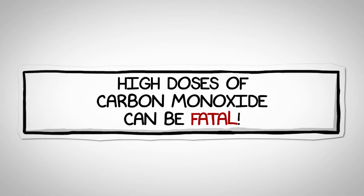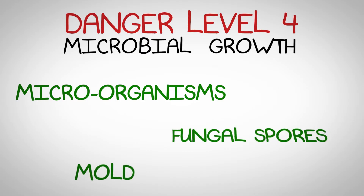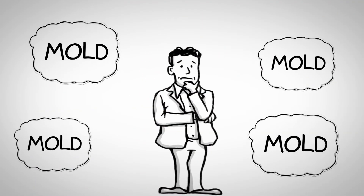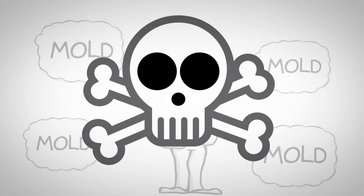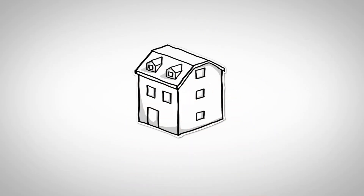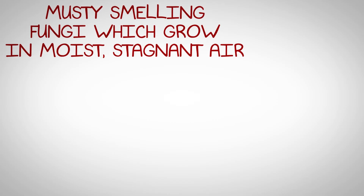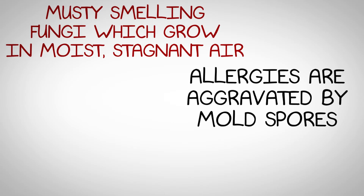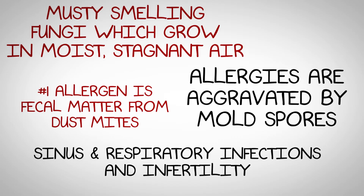High doses of carbon monoxide can be fatal. Danger level 4 contaminants are microbial growth — microorganisms, mold, and fungal spores. You will always have naturally occurring mold; it's everywhere. But when mold is in abundance in areas it shouldn't be, it can reach toxic levels and become a health hazard. Most elevated levels of mold are due to two things: inadequate ventilation in unfinished areas of the home, and moisture intrusion. Mold and mildew are musty smelling fungi which grow in air that is moist and stagnant. Allergies are aggravated by mold spores. The number one allergen is the fecal matter of dust mites, which live off moisture from the air. Mild molds can cause sinus and respiratory infection, while severe molds can have catastrophic health consequences, including infertility.